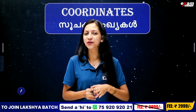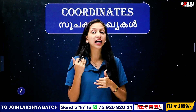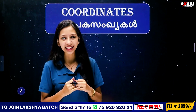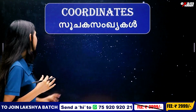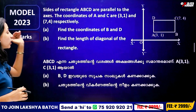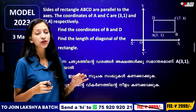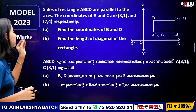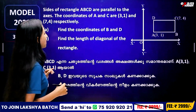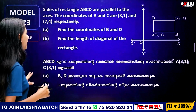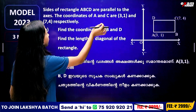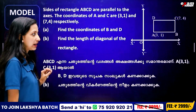We will mark the coordinates and discuss the first question in this chapter. The first question is: the sides of the rectangle A, B, C, D are parallel to the axis. The coordinates of A and C are (3, 1) and (7, 4) respectively.